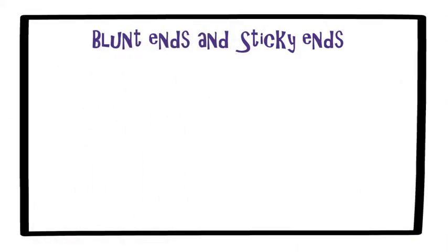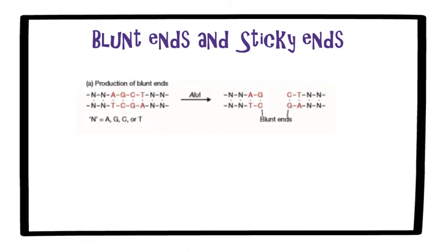Let us study about blunt ends and stickiness. The exact nature of the cut produced by a restriction enzyme is of considerable importance in the design of gene cloning experiments. Many restriction endonucleases make a simple double-stranded cut in the middle of the recognition sequence, resulting in a blunt end or flush end. PvuII and AluI are examples of blunt end cutters.